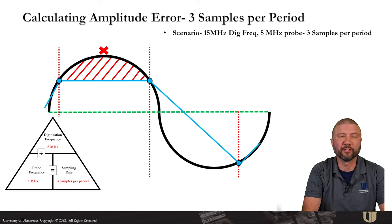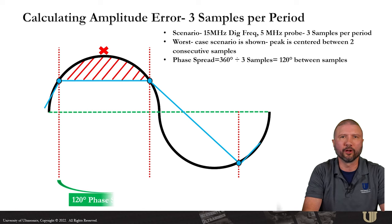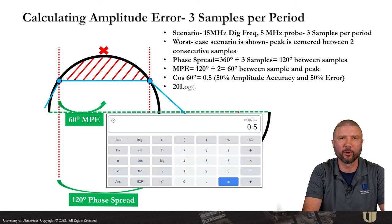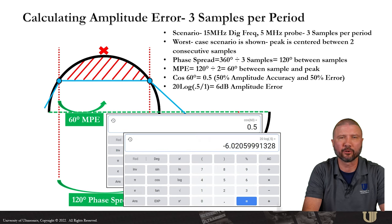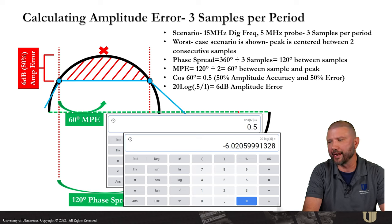So now let's consider a different scenario. I've got a 15 MHz digitizing frequency and a 5 MHz probe, which would give me three samples per period. A worst case scenario is shown where the peak is centered between two samples. Phase spread would be 120 degrees between samples. And if I divide that by two, I get my maximum phase error of 60 degrees. Cosine of 60 degrees is 0.5, which means 50% accuracy and 50% error. Convert that to a dB and I can show that I have 6 dBs of amplitude error at this condition.